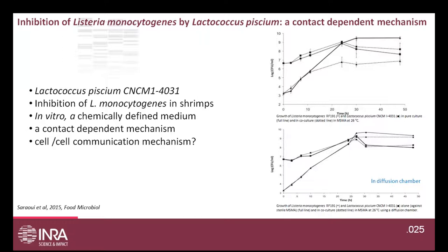Interestingly, L. piscium inhibited Listeria monocytogenes in shrimps through a contact-dependent mechanism. In a diffusion chamber experiment, growth of L. monocytogenes was delayed in co-culture with L. piscium, but when separated by the diffusion chamber no inhibition occurred, confirming contact dependence. This was surprising to the authors and likely represents a new mechanism, probably relying on cell-cell communication, which has not yet been elucidated.